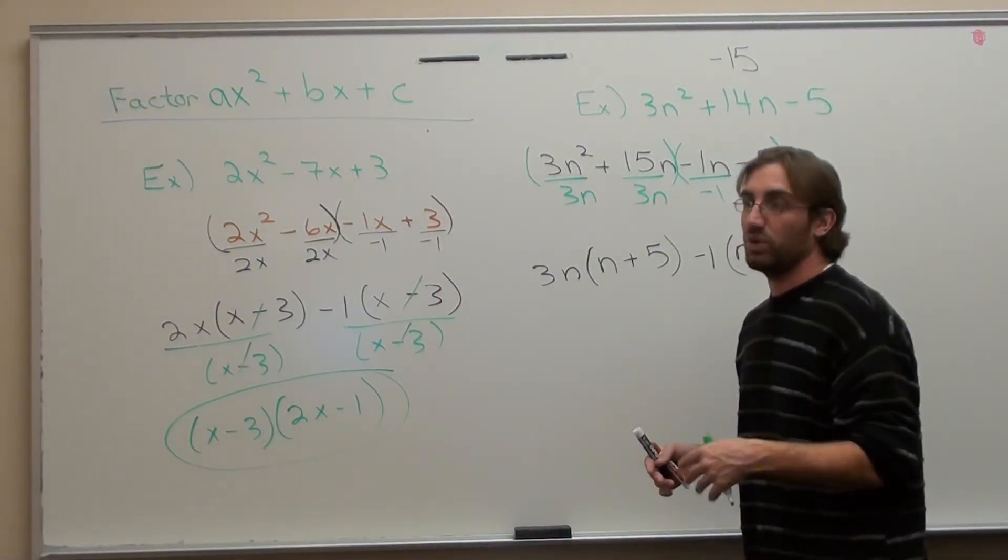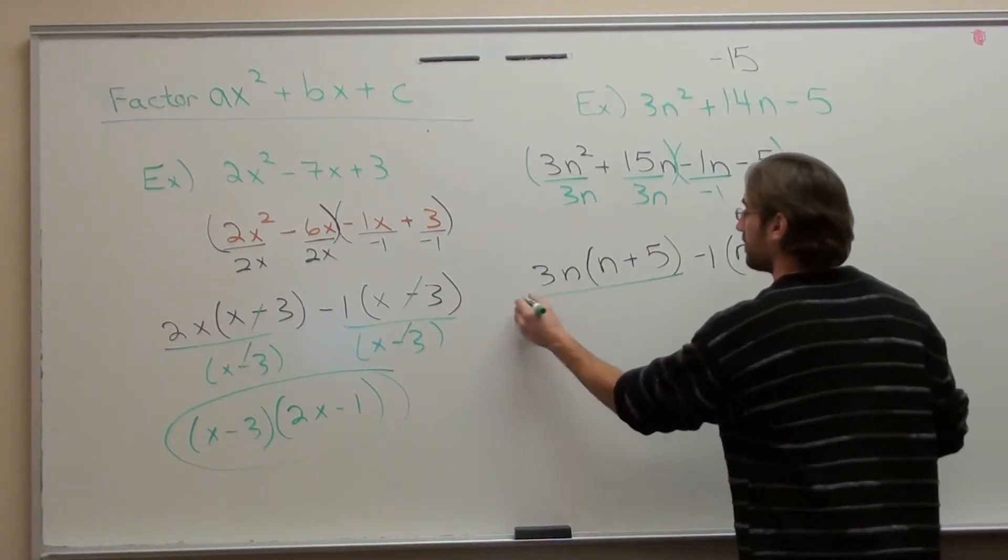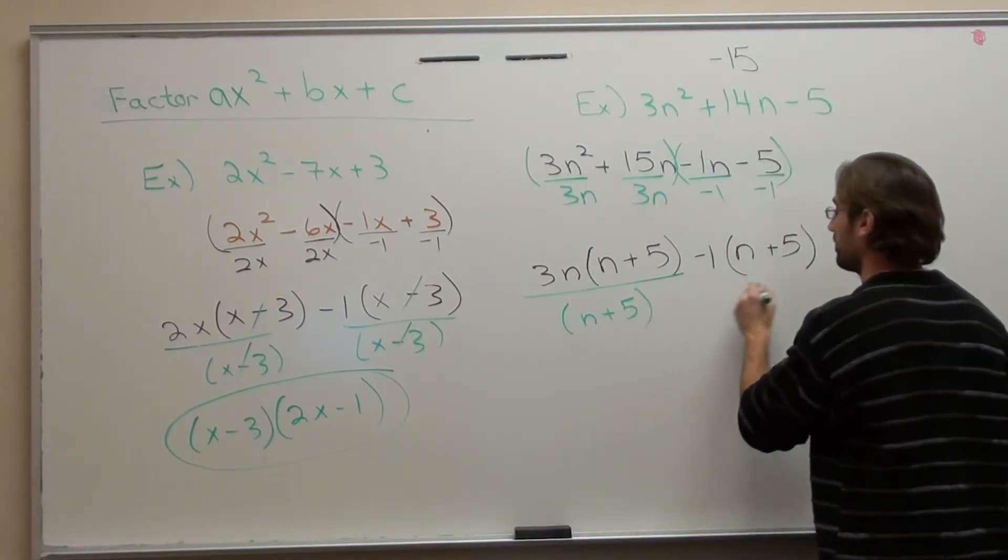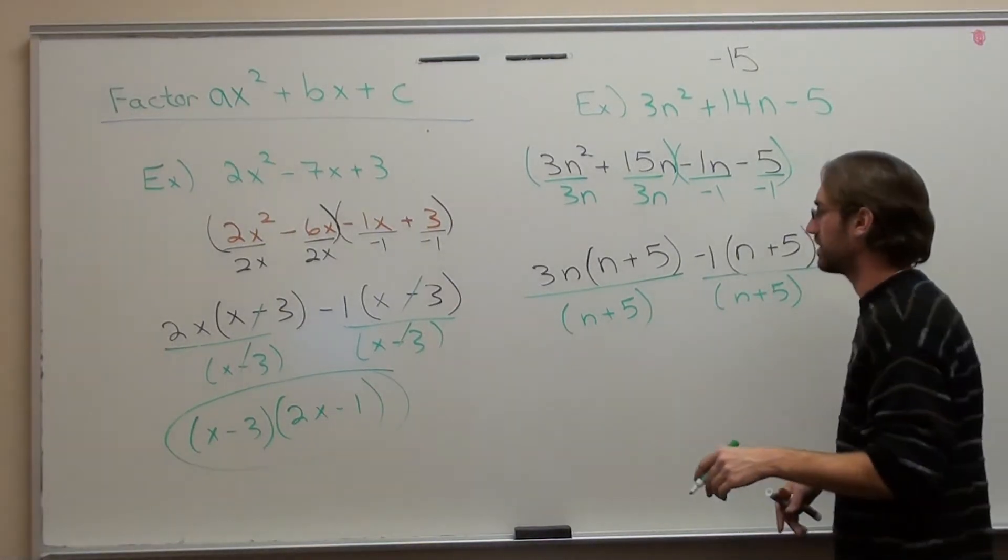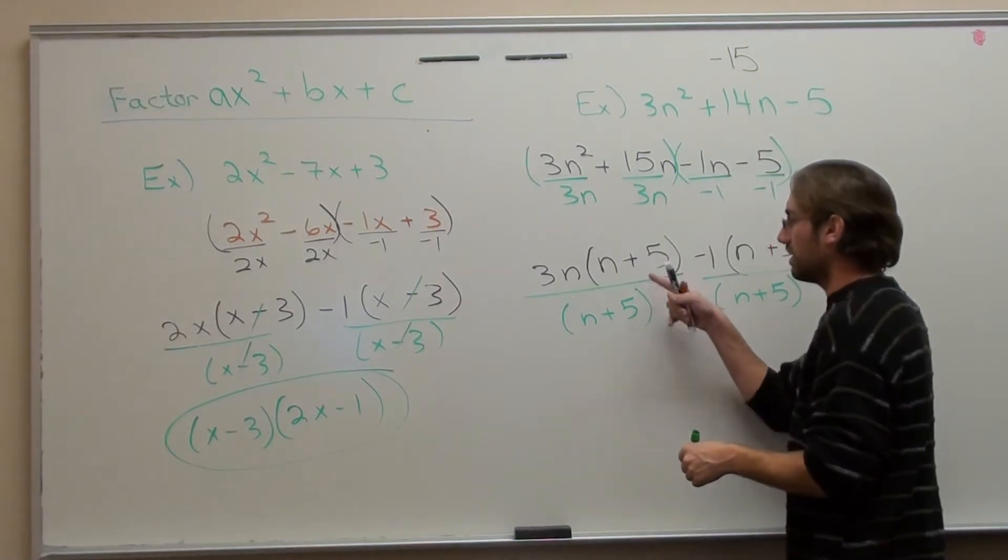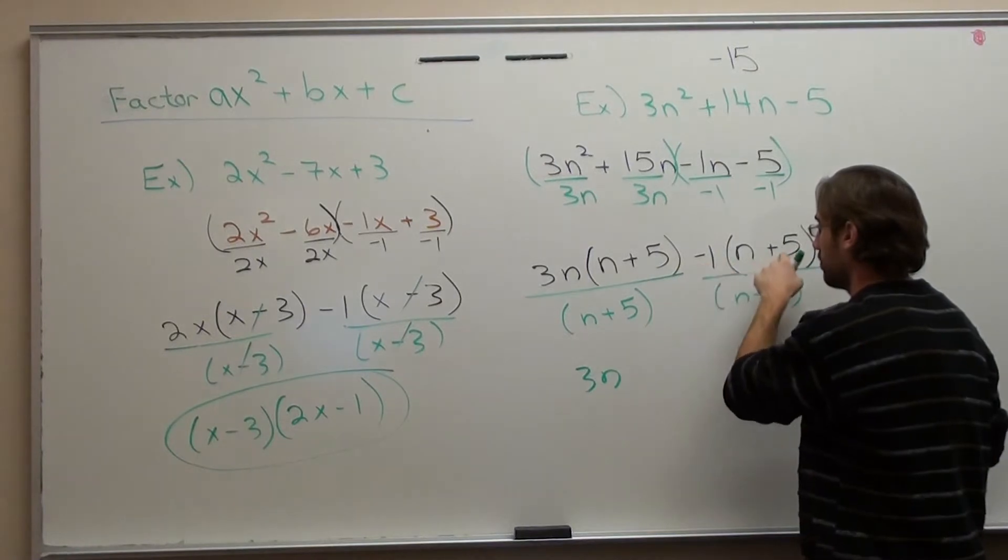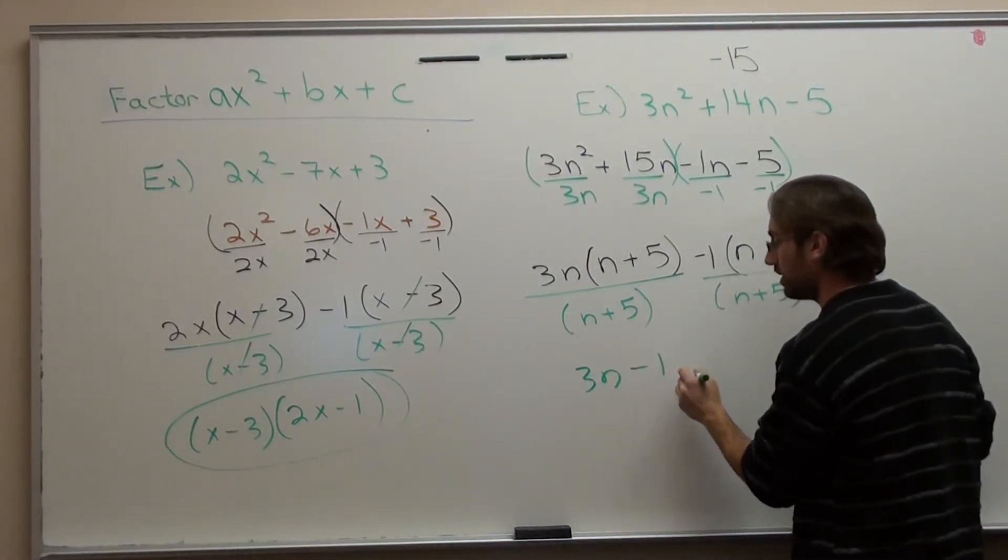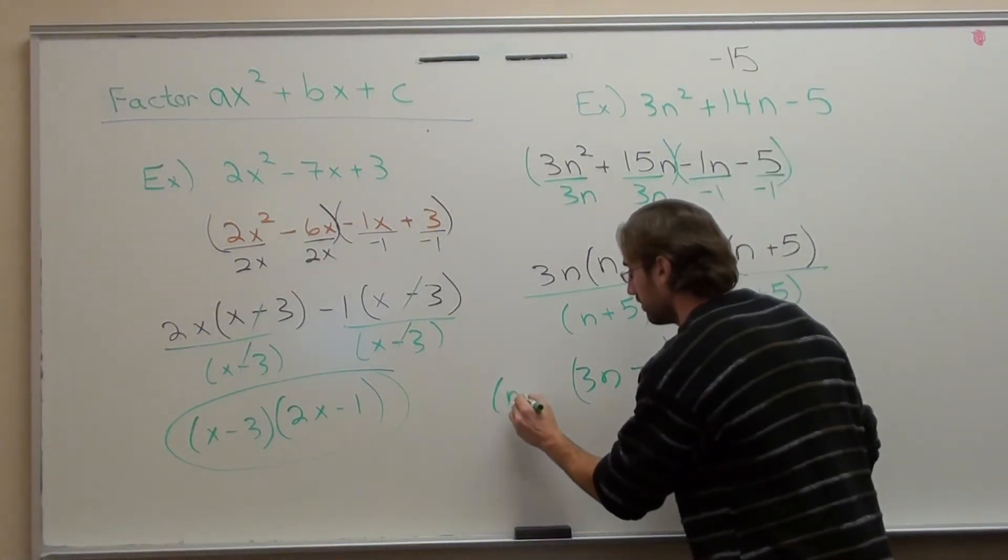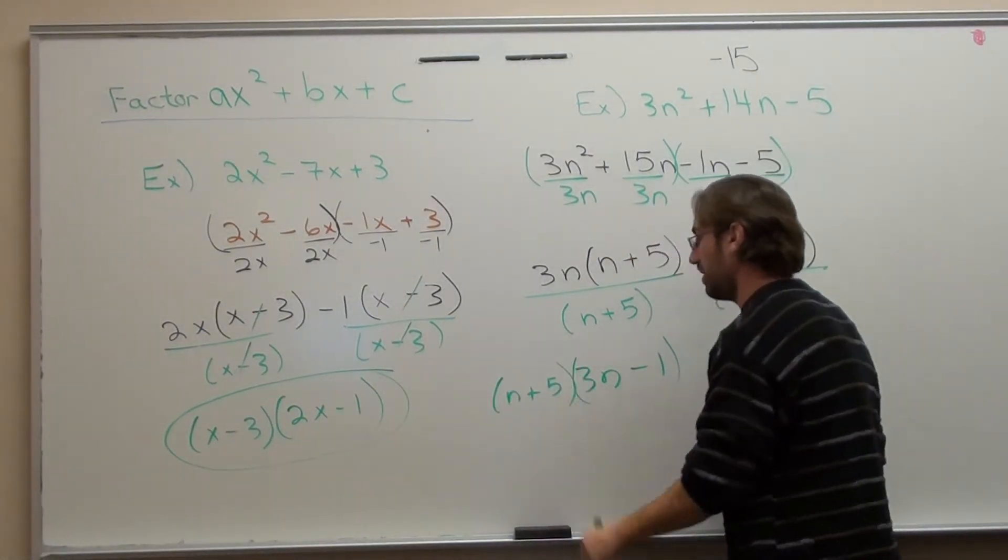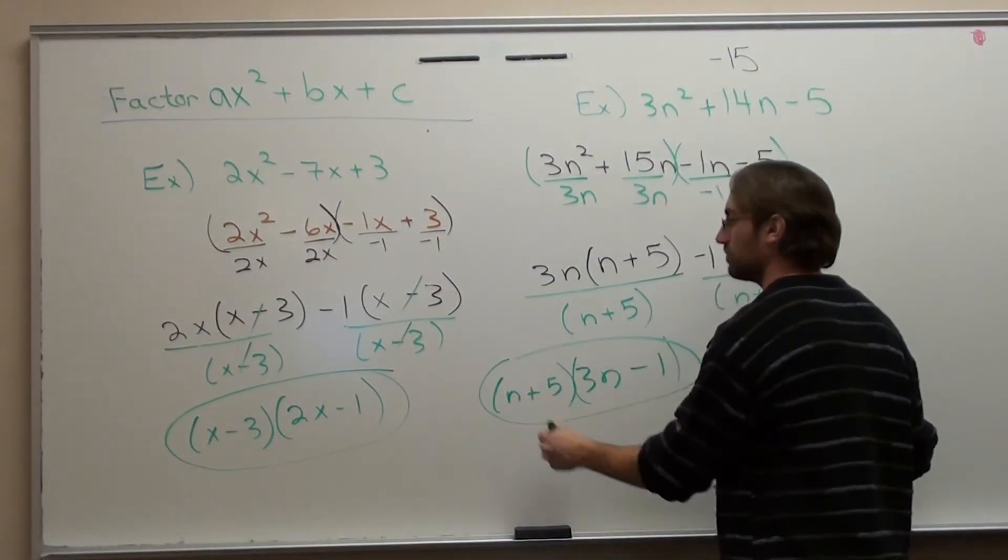And whatever you divide it by, I put it out in front. What do both of these terms have in common that you can take out? And by the way, this is called grouping. Divide these out. And I've got 3n - 1. But what did I divide out? (n + 5). That's the answer when you factor it.